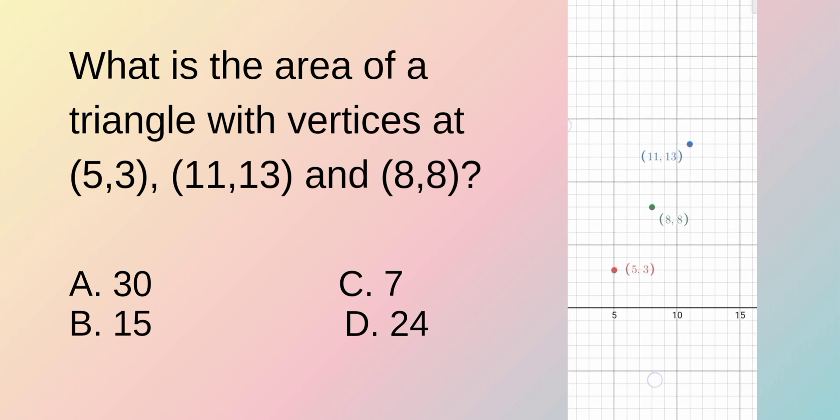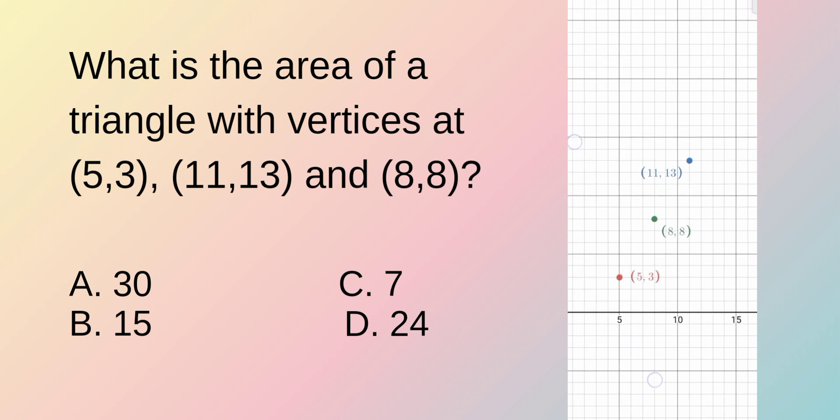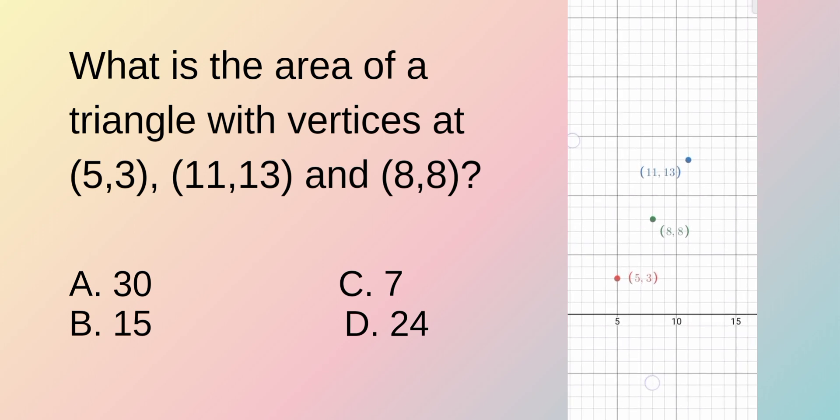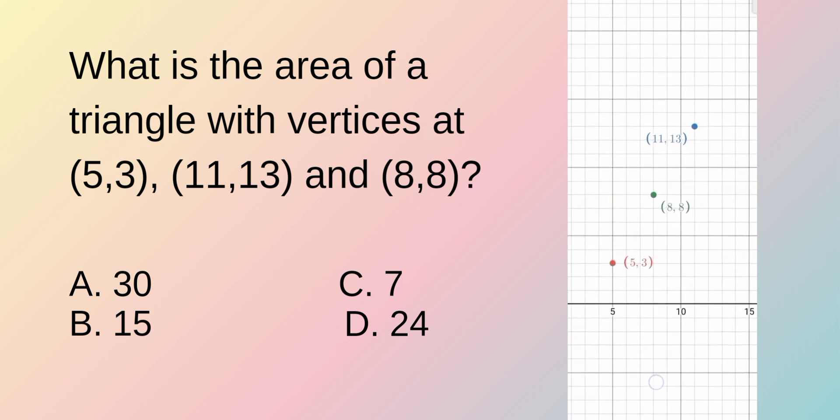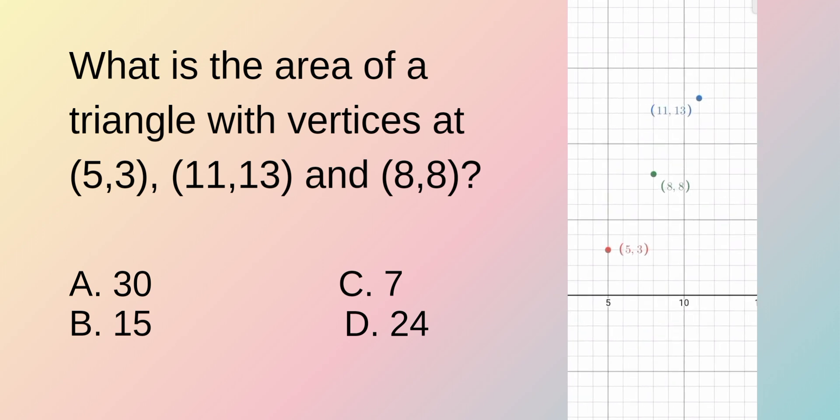We've graphed or plotted the points, but where is the triangle? There's only a line here. Therefore, we conclude that there's a type of error. So, what can we do to form a triangle?